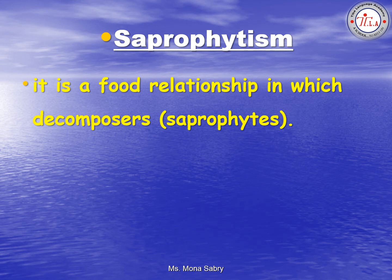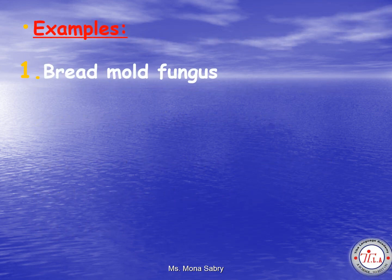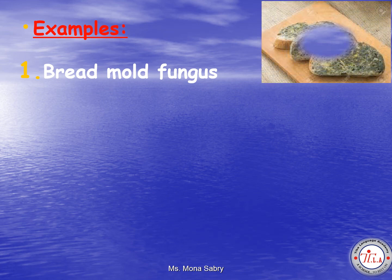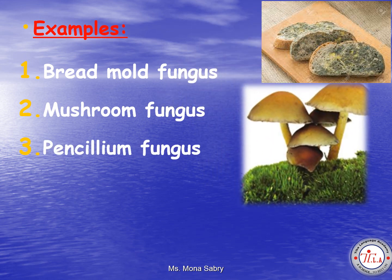The third food relationship among living organisms is saprophytism. It is a food relationship in which the decomposers, called saprophytes, get their food by decomposing food remains or dead bodies of organisms. Examples of saprophytes include bread mold fungus, mushroom fungus, and Penicillium fungus.